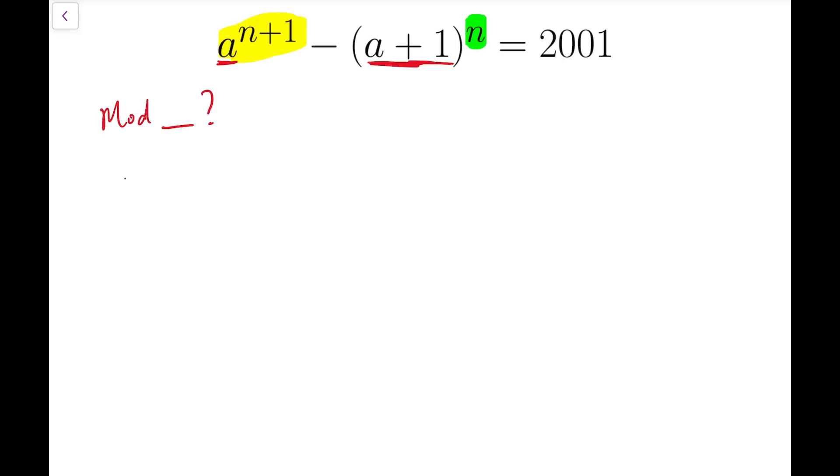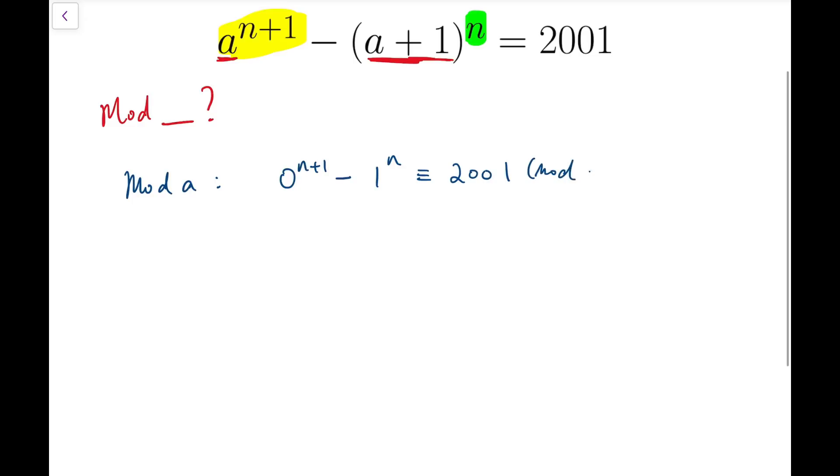The first case would be, if we do mod a, then for the first term, in yellow, it will become 0 to the power n plus 1, which is 0, and then minus 1 to the power n, and that's actually 1, and that's congruent to 2001. We cannot do anything on 2001 because we do not know the value of a yet. So from this, we can say that 0 minus 1 is congruent to 2001 mod a.